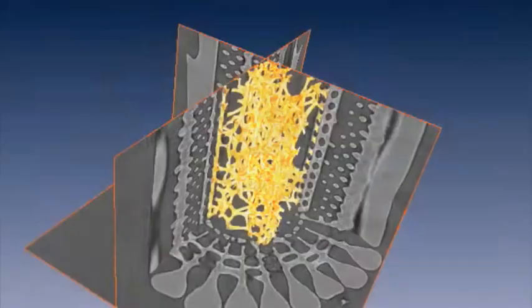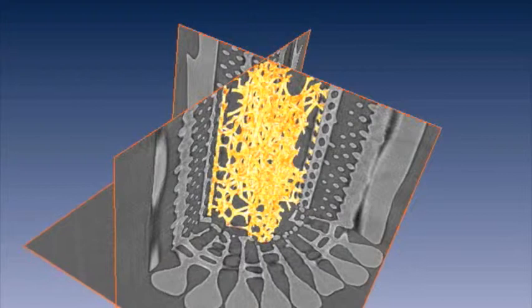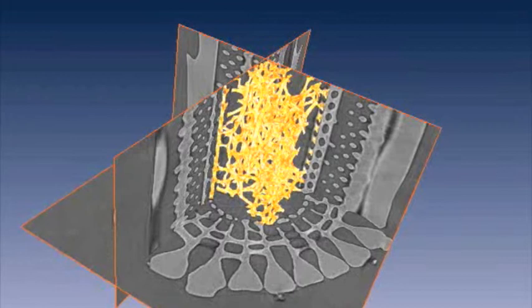Sea urchins protect themselves with rigid spines projecting from their bodies. The spines of some species of sea urchins are very long and quite flexible and are single crystals of calcite.